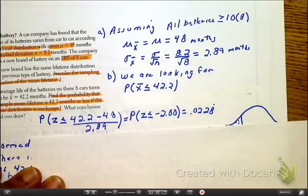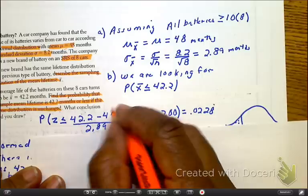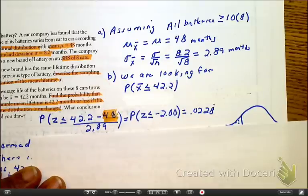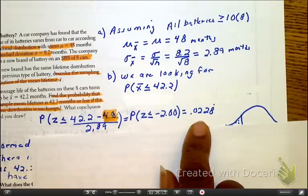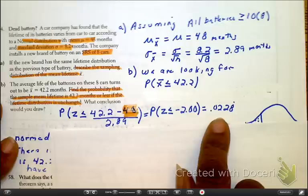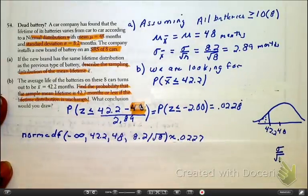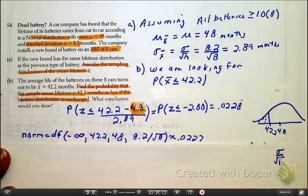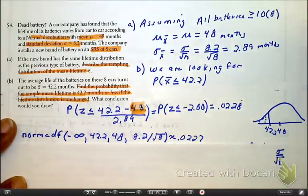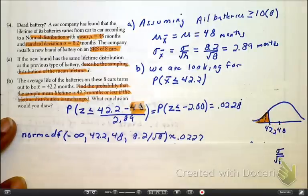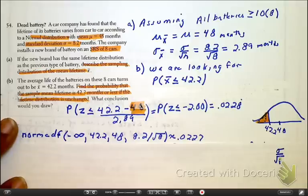As we jump into the z-score formula, we just plug it in. Remember right here is your μ, that is your 48 months right there. Here is your z and here is the probability. Here is your calculator. I didn't do the calculator on the previous problem because I just didn't have enough room. Please recognize here is our bell. I will be honest, I didn't do the bell on the other one, I literally forgot, that was just an oops.